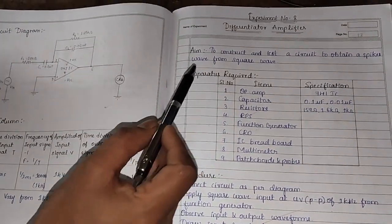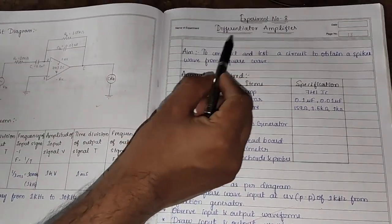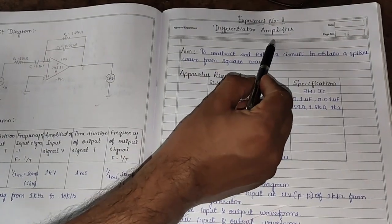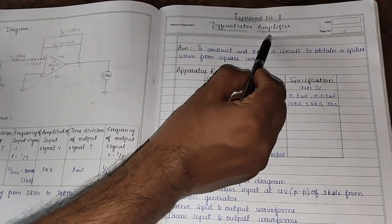In this video, I will explain about a differentiator amplifier using op-amp 741.